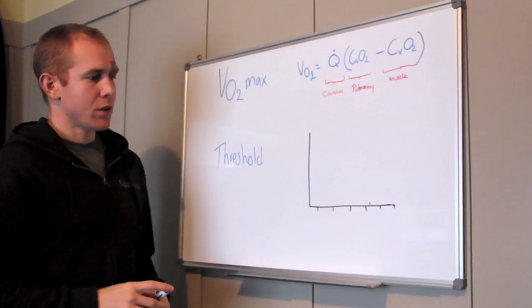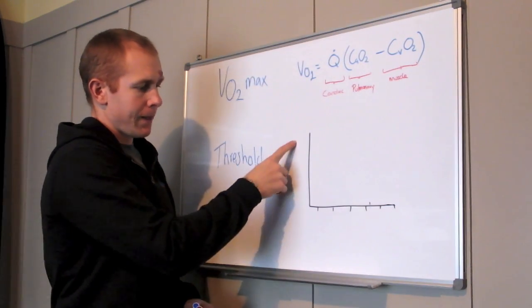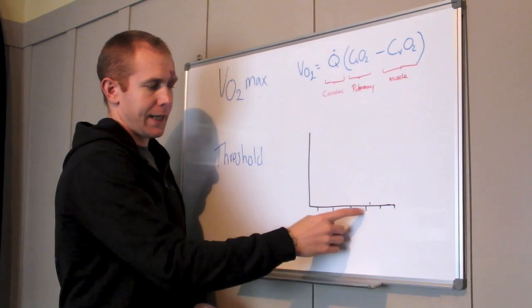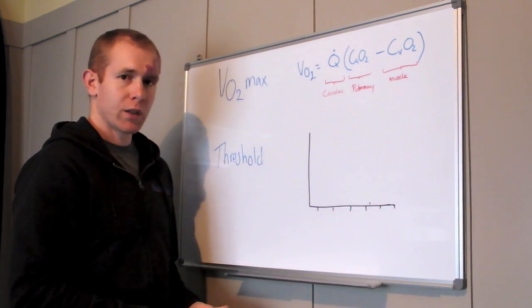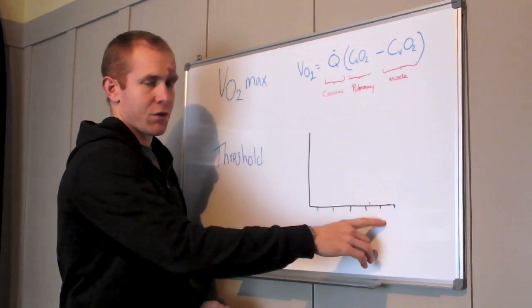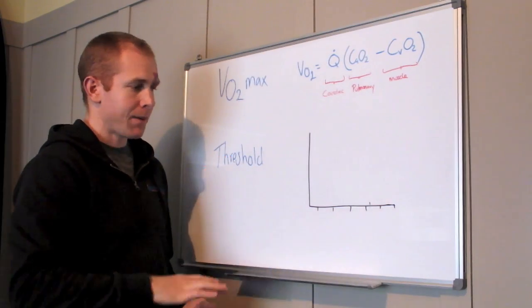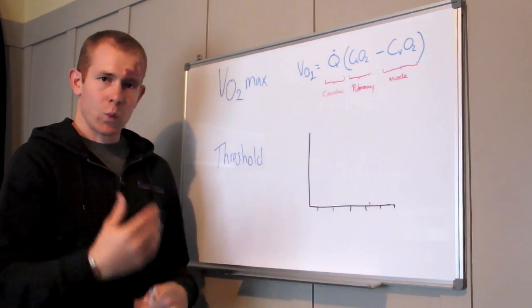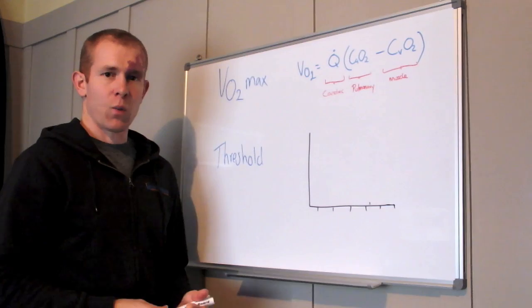So if we were to get you set up on a bike or a treadmill, whatever it might be, and got you exercising at increasing workloads, so if it was on a treadmill you'd just get faster and faster and faster or would put the gradient up. If it was on a bike we'd make it harder, increase the wattage.